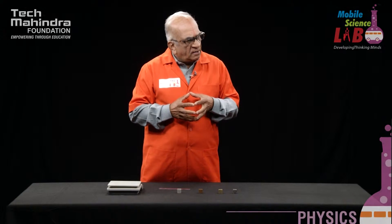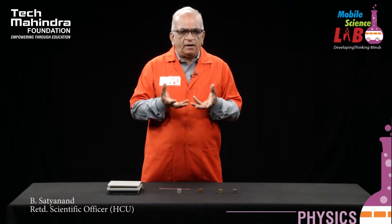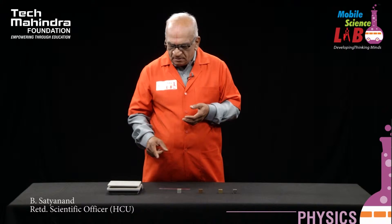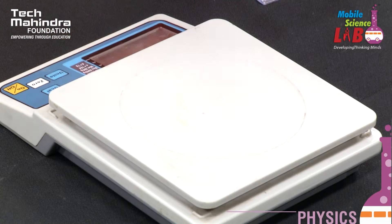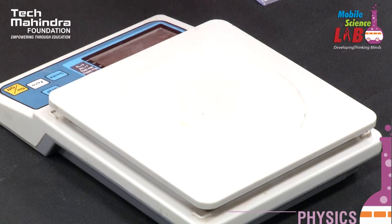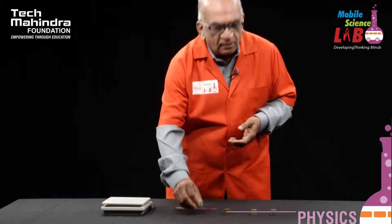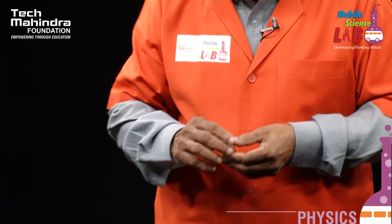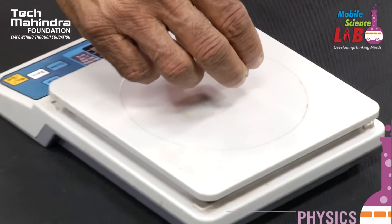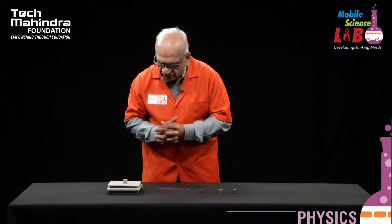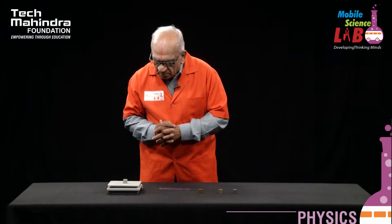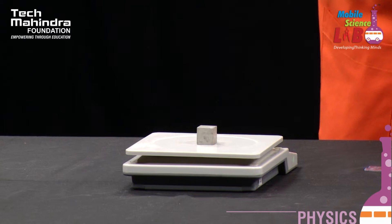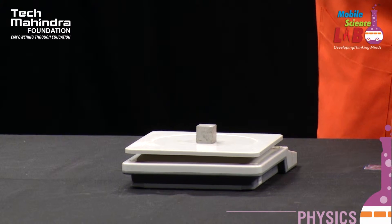To find out density, you need the mass of the object. To measure the mass, you have to have a weighing machine. This is the top-loading balance weighing machine. Let us take the aluminum cuboid and measure its weight. We have measured it — the weight of the aluminum cuboid turns out to be 17 grams.